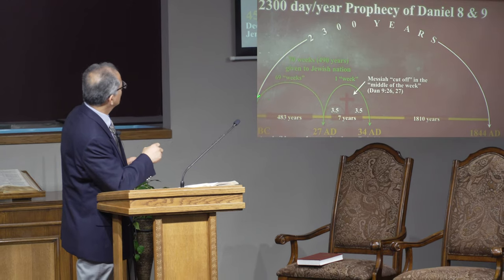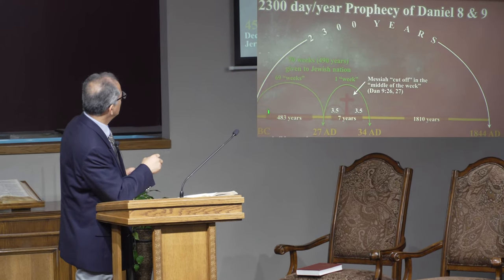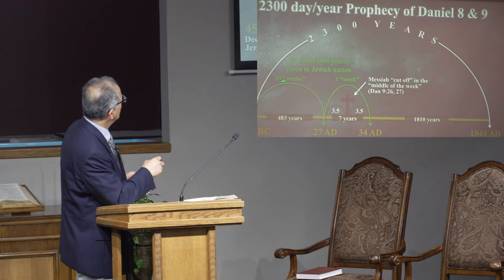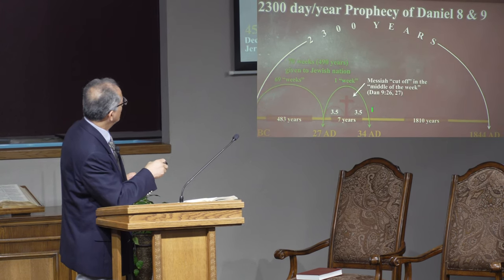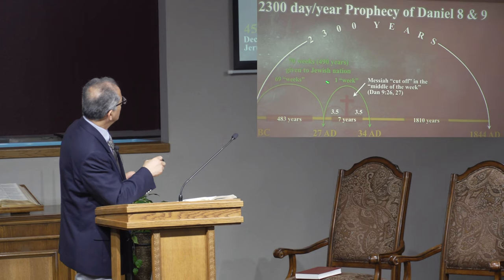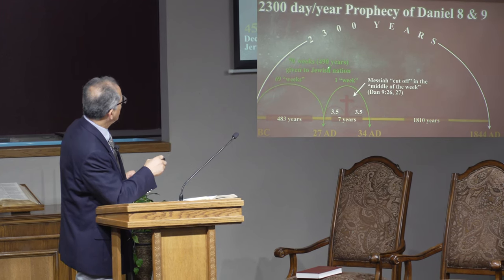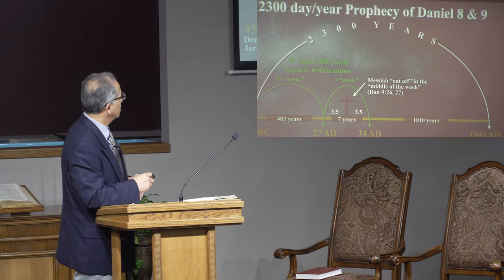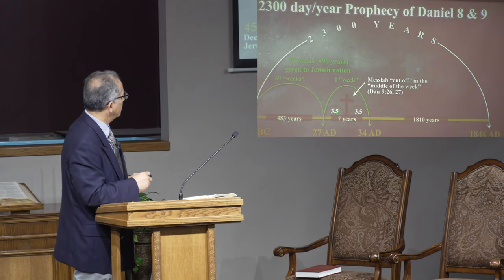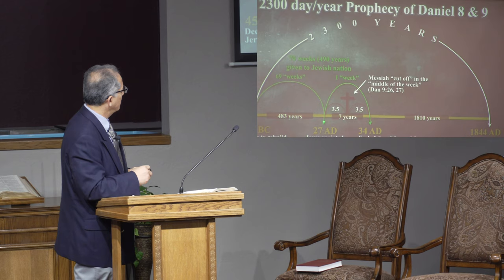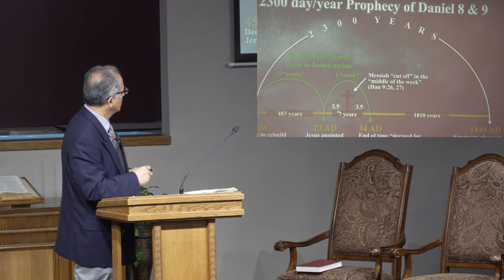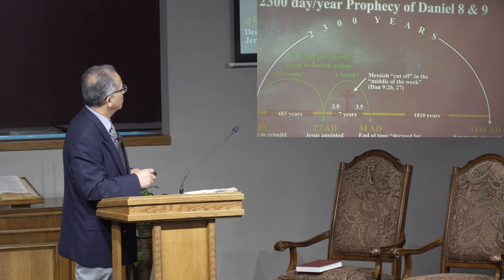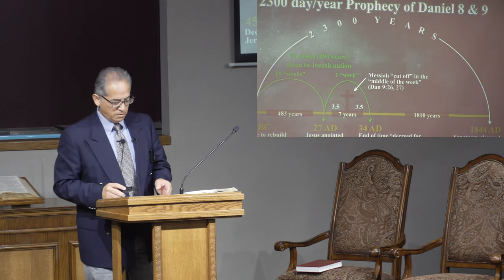The angel Gabriel says there are seven weeks, which comes to 408 BC, then 62 weeks — I summarize it as 69 — and then there's the last week. This is the 70-week prophecy of Daniel chapter 9, with the same beginning point as Daniel chapter 8. The Messiah is cut off in the middle of that final week — three and a half years — which is what happened at the end of 483 years, and at the end of the full 70 weeks. Then there's time left over — 1810 years — and you get to 1844.